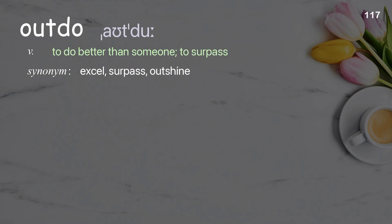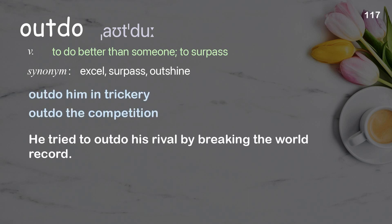Outdo: to do better than someone; to surpass. Examples: outdo him in trickery; outdo the competition. He tried to outdo his rival by breaking the world record.